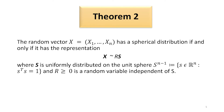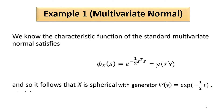Theorem 2 states that the random vector x with n components has a spherical distribution if and only if it can be represented as r times s, where s is uniformly distributed on the unit sphere S^(n-1), and r, which is non-negative, is a random variable that is independent of s.